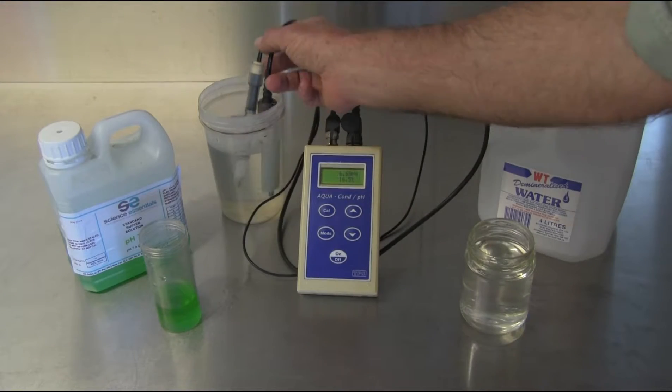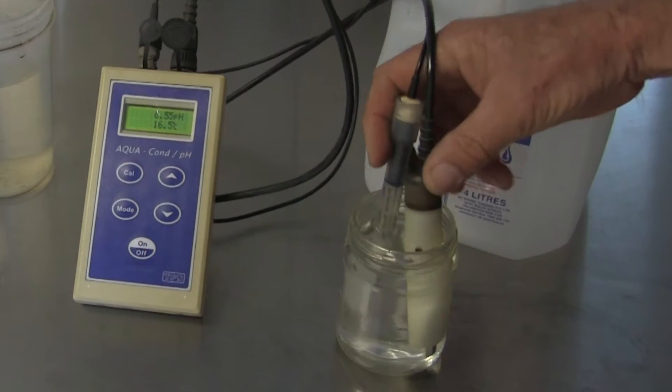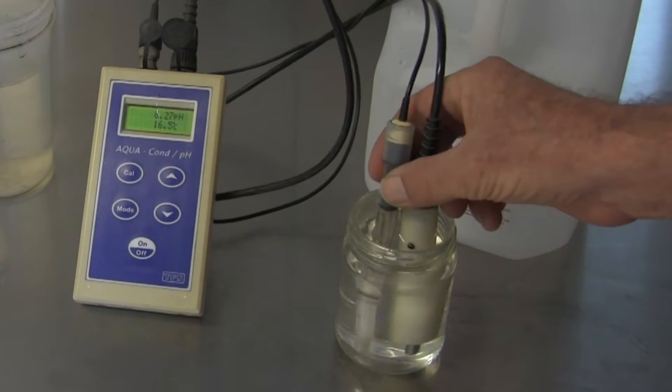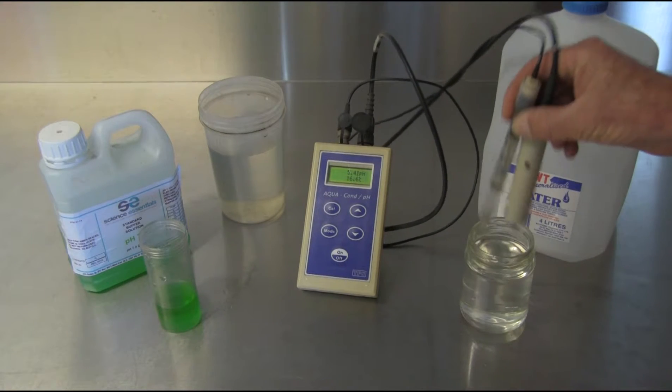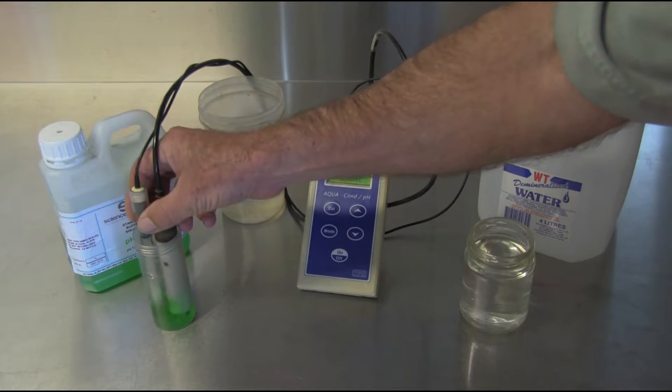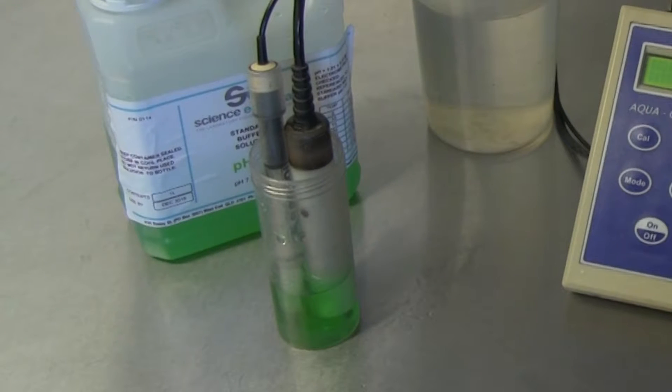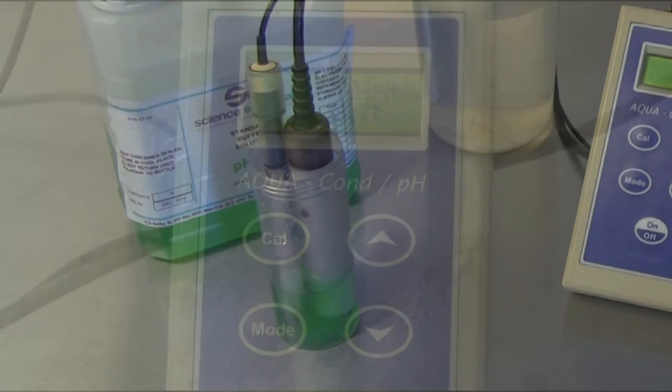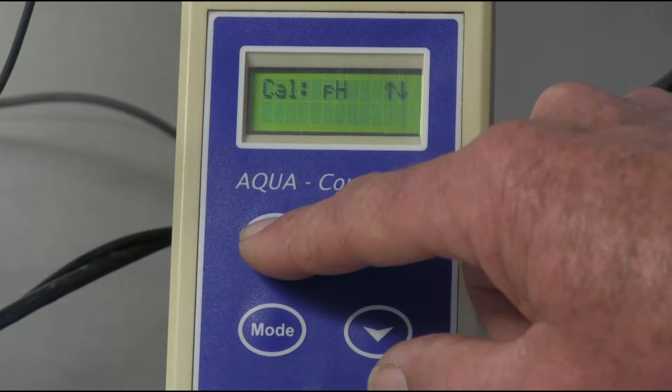Take the pH sensor out of the storage solution. Rinse the sensor with distilled water. Remove and carefully shake off any excess water. Immerse the pH sensor in a small quantity of pH 7 or pH 6.88 buffer, ensuring the end of the sensor is submerged to a depth of 2 to 5 centimeters. Allow the pH reading to stabilize, then calibrate the meter according to directions.